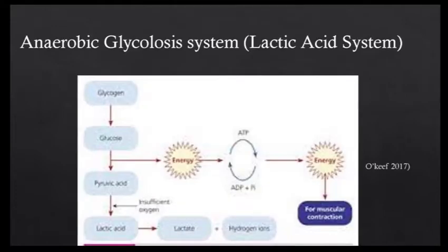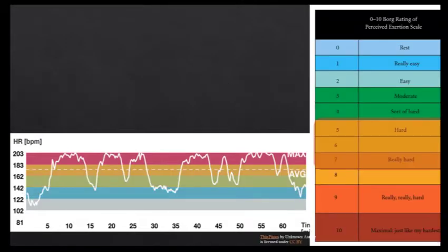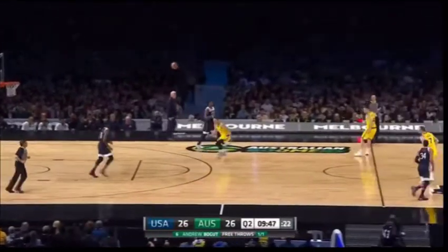According to research, the anaerobic glycolysis system is the dominant source of energy after 10 seconds of sub-maximal activity. This system is dominant during events that demand 70-80% of your heart rate or make your heart beat at 142-162 beats per minute, or requires an exertion rate of 5-7. This energy system can last up to 3 minutes and is primarily used in events that are at high demand and for a low duration of time.